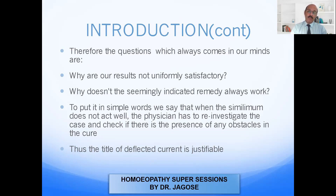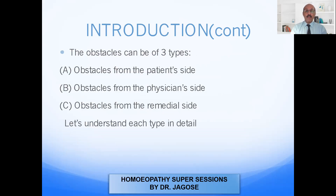Robert puts this as the deflective current, which is quite justified. The obstacles to cure can be divided into three main types: number one, obstacles from the patient side; second, obstacles from the physician side; and third, obstacles from the remedial side. We will understand each point A, B, C in a little more detail.